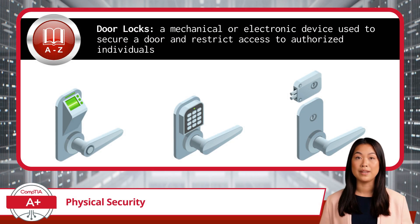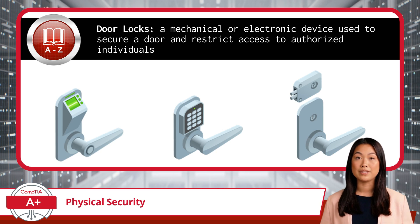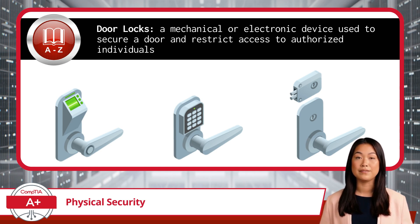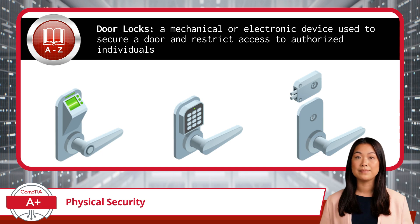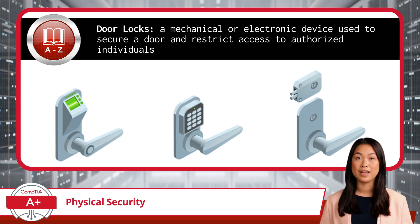Let's not forget about door locks, which are your first line of defense at any entry point. A door lock is a mechanical or electronic device used to secure a door and restrict access to authorized individuals. These can range from traditional keyed locks to advanced biometric systems that use fingerprints, facial recognition, or iris scans to grant access. Biometric locks are especially secure since they rely on something unique to each individual, making them much harder to bypass than a key or code.